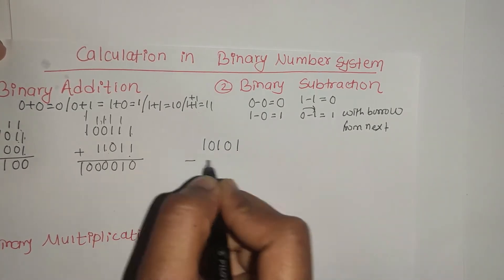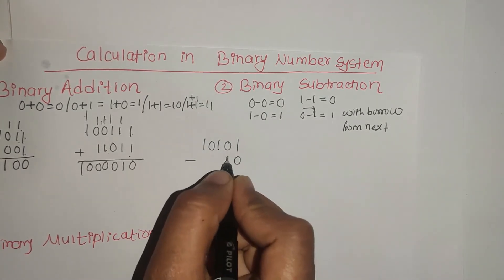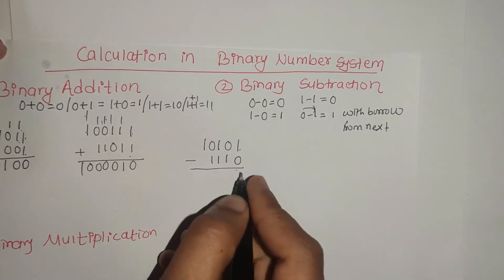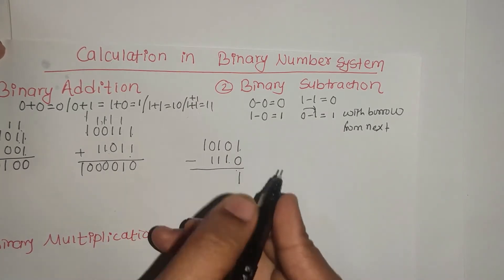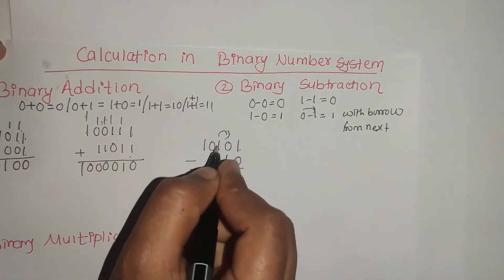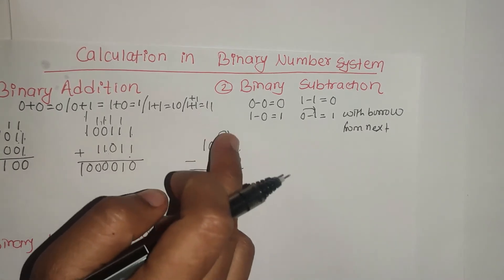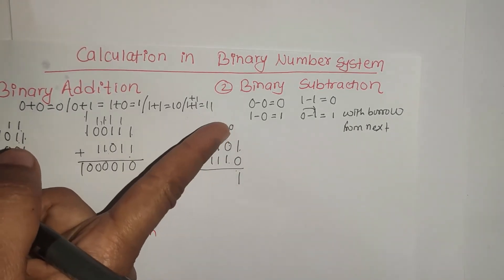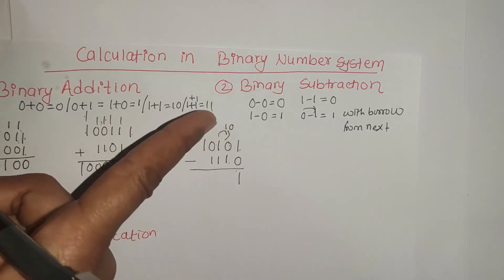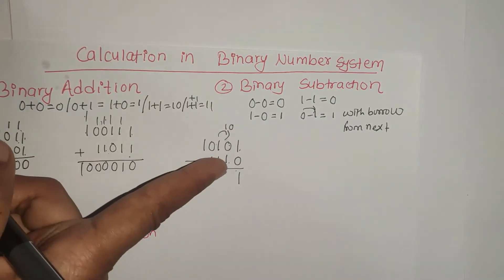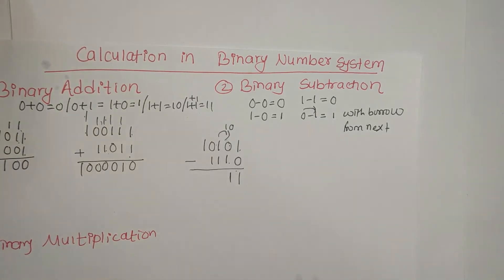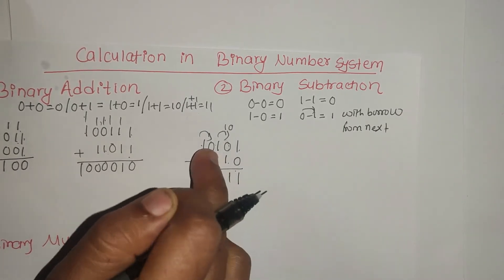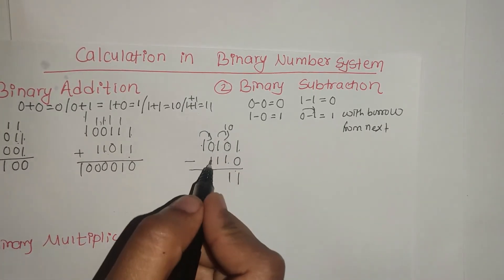Let me show with an example: 10101 minus 0111. We subtract column by column. 1 minus 0 is 1. For 0 minus 1, we borrow from the next position, making it 10 minus 1.